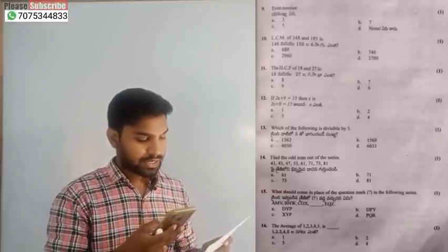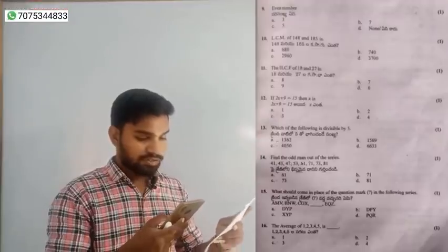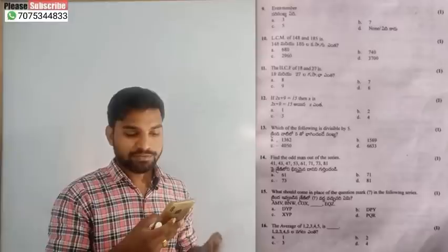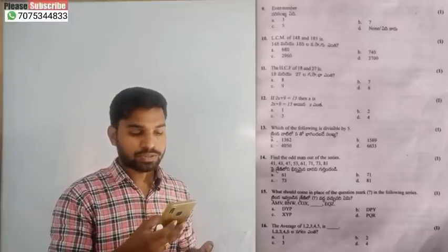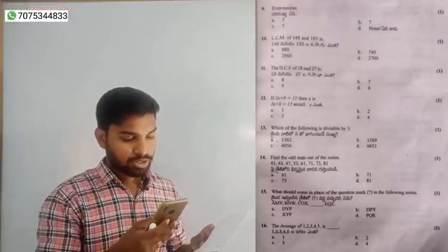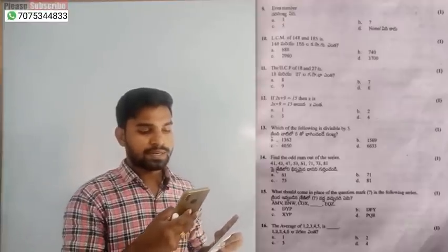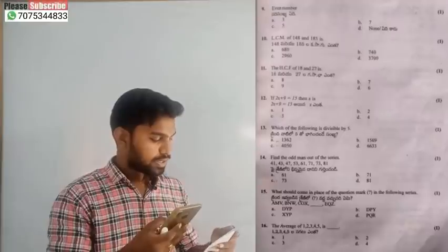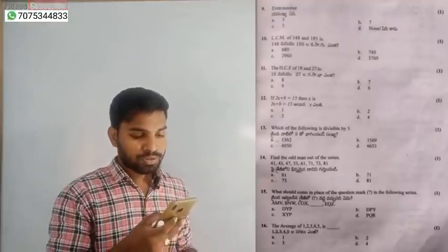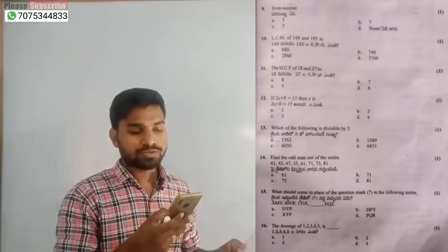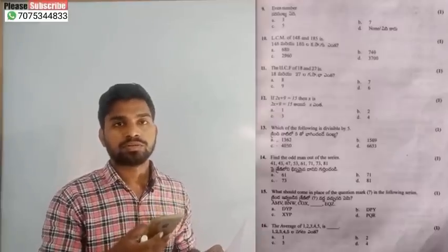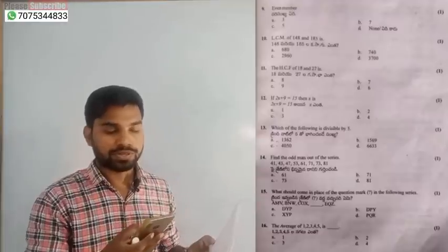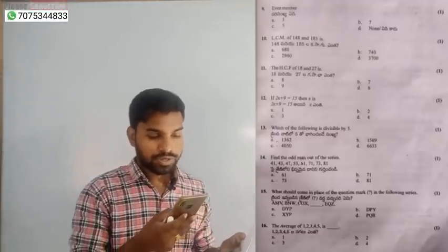Question number 10: find the LCM, which is equal to 740 — option B is the correct answer. Question number 11: find the HCF — 9 — option C is the correct answer. Question number 12: 2x plus 9 is equal to 15, so x value is equal to 3 — option C. Question number 13: which of the following is divisible by 5? Five divisibility rules are easy — option C, 4050 is divisible.